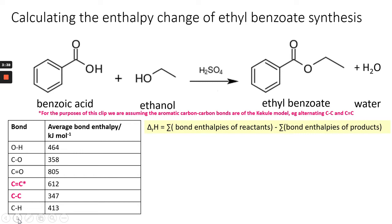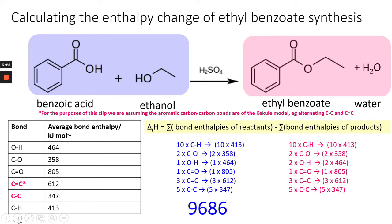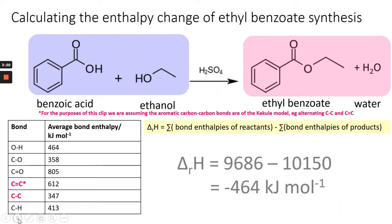Adhering to the equation in the yellow box, we take the reactants and add up all the bonds, which gives us 9,686. Then we take the products, add up all the bonds, and that gives us 10,150. Subtracting one from the other gives us minus 464 kilojoules per mole, which means we have an exothermic reaction.